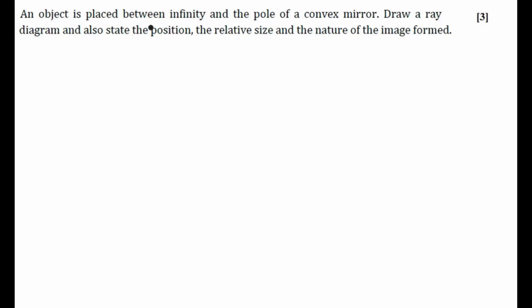An object is placed between infinity and the pole of a convex mirror. Convex mirror is something like this. This is your convex mirror. Draw a ray diagram and also state the position, the relative size and the nature of the image form.